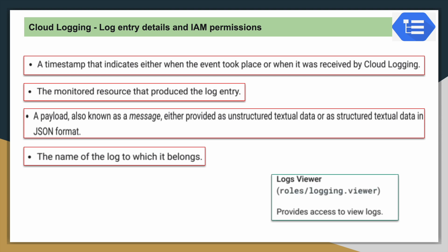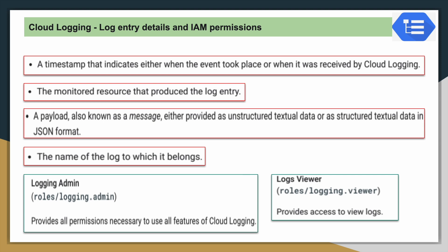Now we will talk about what IAM permissions are required to access this logging service. The basic IAM permission required is the Logs Viewer role, which allows you to view or read all logs related to all services. If a user would like to have full control on the log API, then they should have the Logging Admin role — needed if you want to export logs into other Google Cloud services.